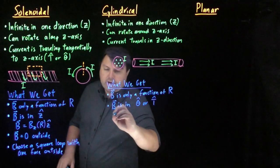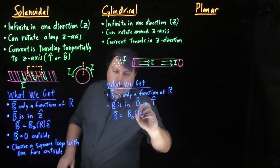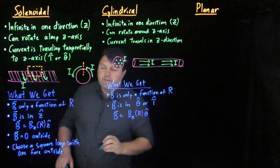So what we can say, and I'll use theta hat, that B is in the theta direction as a function of r, theta hat.